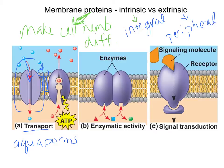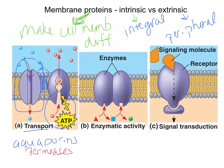These transport proteins allow things to get back and forth across the membrane and are also sometimes called permeases, meaning they allow things to permeate. A lot of our enzymes are proteins, so these permeases are transport proteins. We also have proteins that act as enzymes — they'll have an active site and help speed up a chemical reaction.